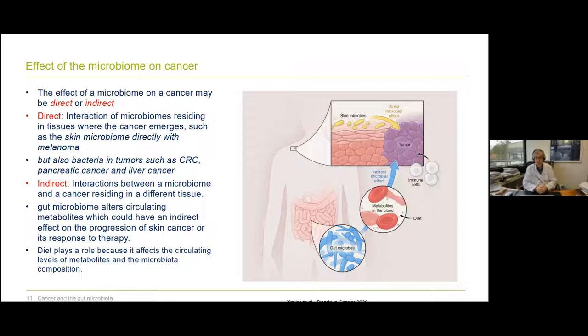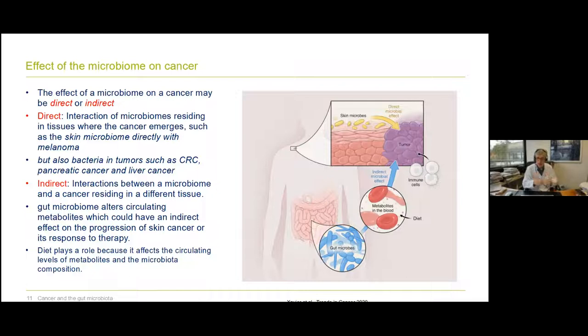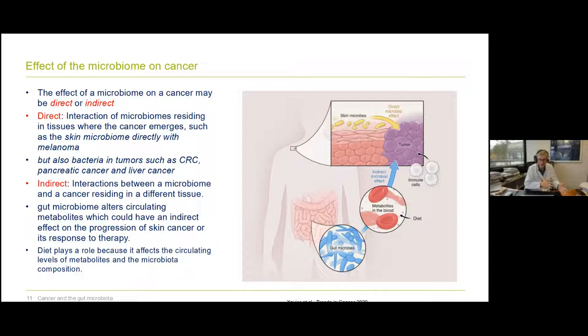The effect of the microbiome on cancer can be either direct or indirect. In the direct effect, microbiomes residing in tissues where the cancer emerges — such as the skin interacting with melanoma — play a role. Interestingly, we also have bacteria within tumors: in colorectal cancer, pancreatic cancer, liver cancer — there is an intratumoral microbiome. Indirect effects involve interaction between microbiota and cancer residing in a different tissue — long-range effects caused by metabolites that promote progression of skin cancer or alter its response to treatment. Diet can play a role here because it affects circulating metabolite levels and microbiota composition in the bowel.